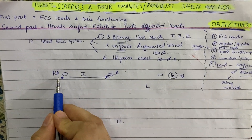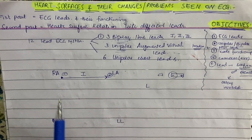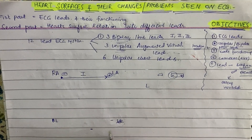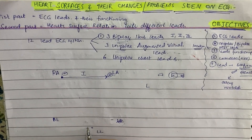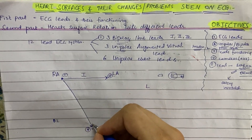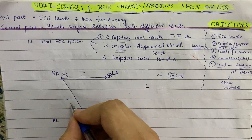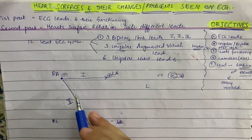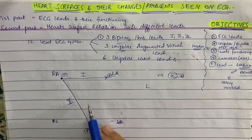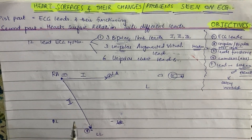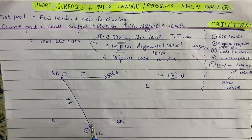Lead 2 is made by connecting the right arm with the left leg. Comparing them, the left leg has more L's, so we make the left leg positive and the right arm negative. The vector moves from right arm to left leg, negative to positive. This is Lead 2. Since the heart's electrical axis moves from the SA node to the apex in the same direction, Lead 2 is very important for identifying major cardiac problems.